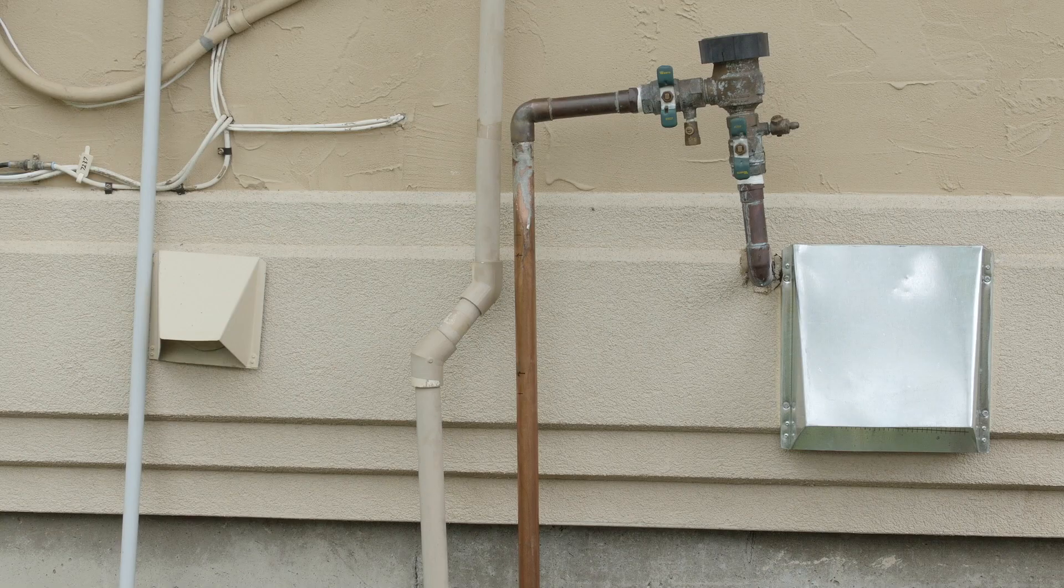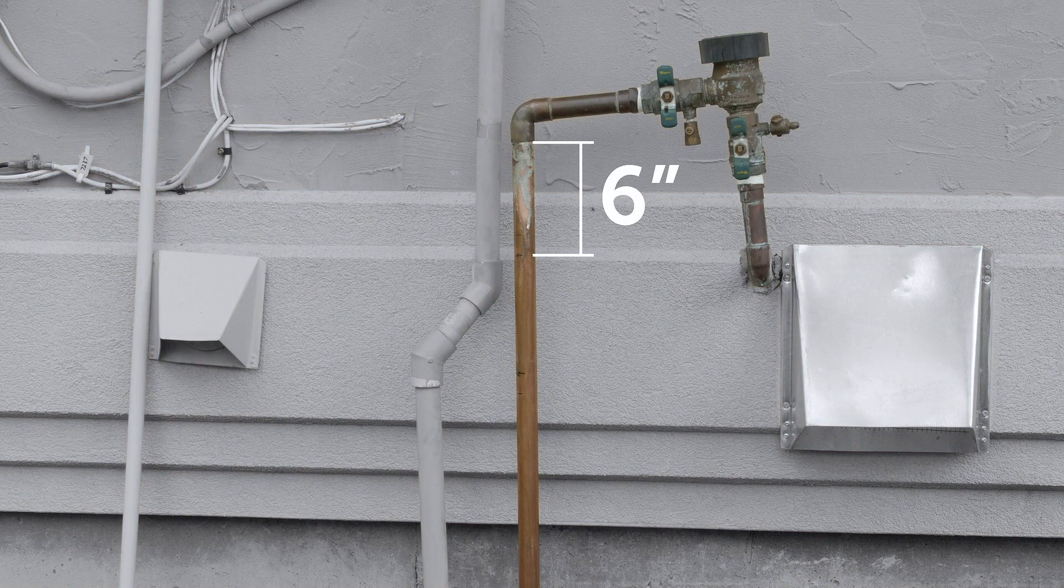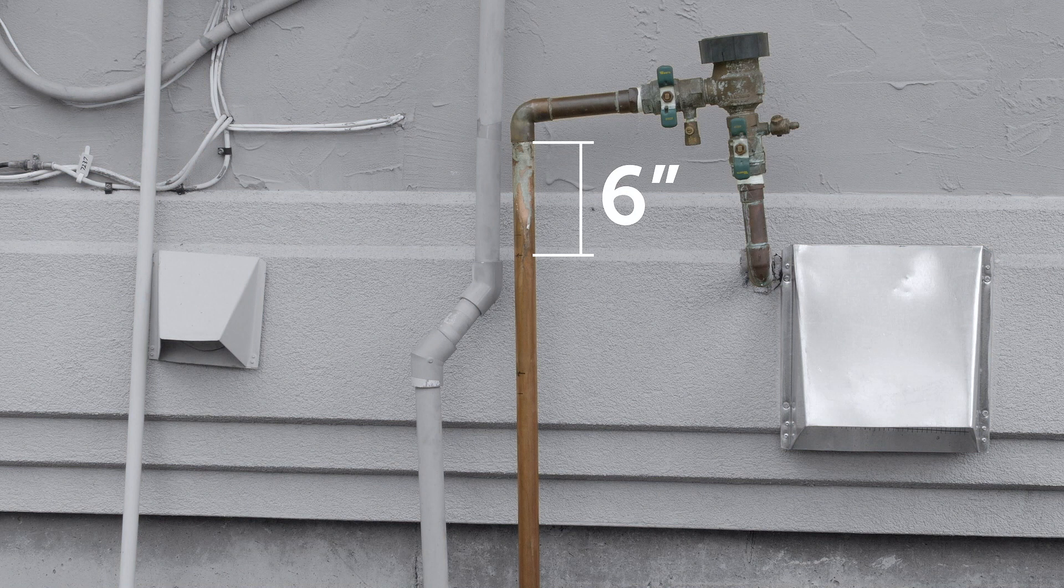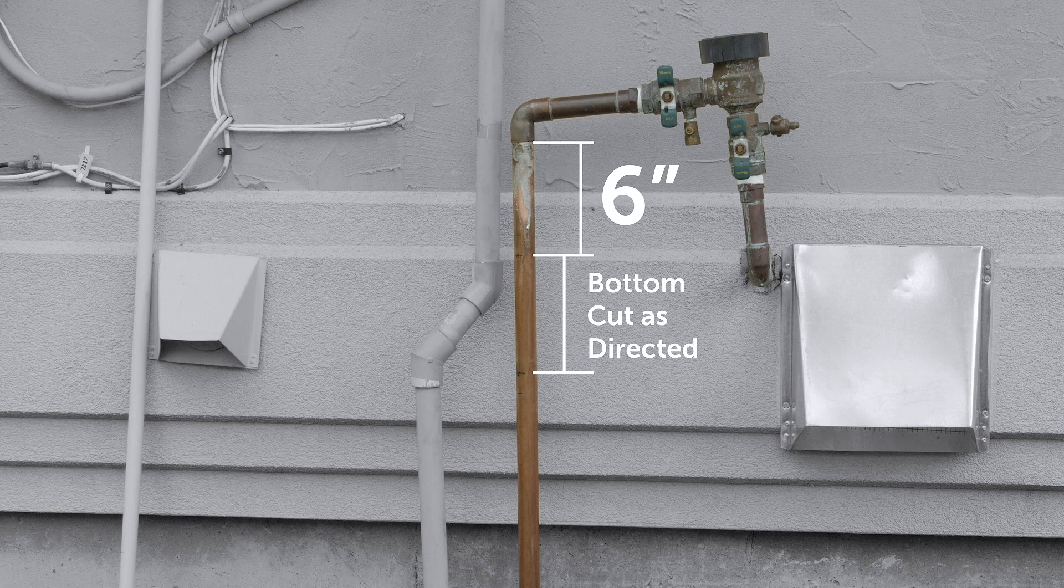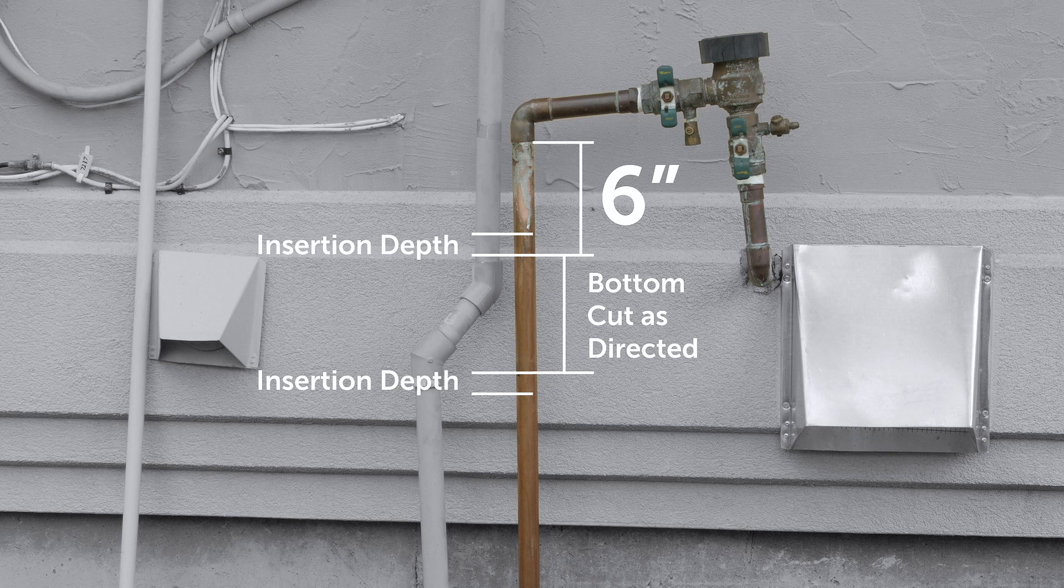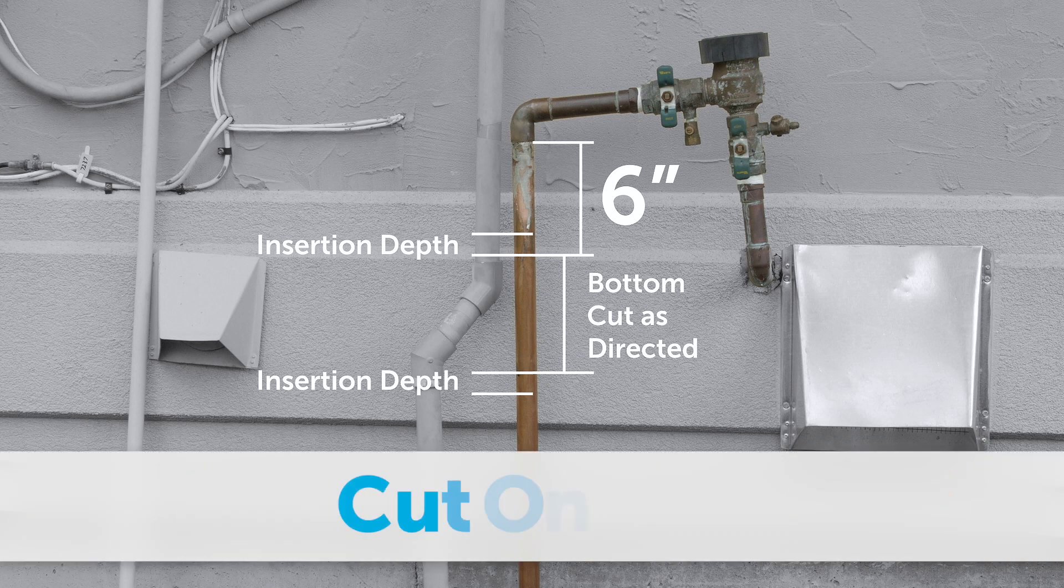Measure everything one more time. The top cut is down 6 inches of straight pipe after the backflow preventer. The bottom cut is below that as indicated in the instructions for your type of pipe. Insertion depth marks are above the top cut and below the bottom cut. Measure twice, cut once.